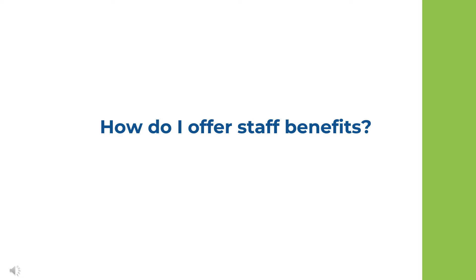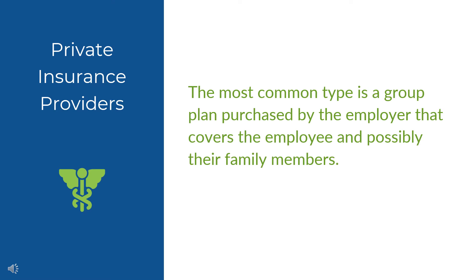Let's consider some benefit providers you may come across. Private insurance providers are what we typically think of as traditional insurance providers, like Blue Cross, Blue Shield, or Aetna. The most common type is a group plan purchased by the employer that covers employees and possibly their family members. These plans may cost less than an individual seeking their own plan; however, they can still have a price tag that may be too costly for the average child care provider's budget.